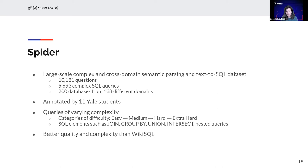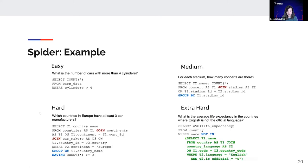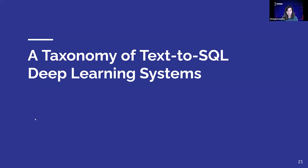SPIDER, on the other hand, contains fewer questions — around 10,000 — but covers 200 databases, allowing queries over multi-table databases rather than single tables. It is a much cleaner dataset because it was annotated by a small group of people, and queries were divided into four categories based on difficulty from easy to extra hard. SPIDER has better quality and higher complexity than WikiSQL, and it is the benchmark mostly used in recent years by all deep learning text-to-SQL systems. The complexity of the SQL query characterizes whether a query is easy or extra hard.